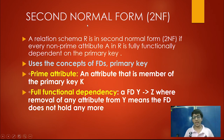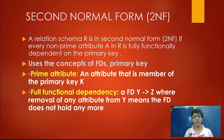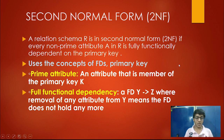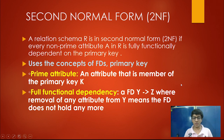A relational schema R is in second normal form (2NF) if every non-prime attribute A in R is fully functionally dependent on the primary key. A prime attribute is one that is a member of the primary key K. Full functional dependency Y → Z means that removal of any attribute from Y causes the functional dependency to no longer hold.